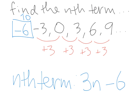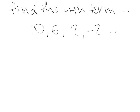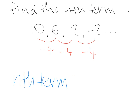Now we have the sequence 10, 6, 2, -2. First, investigate whether it's arithmetic. From 10 to 6 we minus 4, from 6 to 2 we minus 4, from 2 to -2 we minus 4 — so it is an arithmetic sequence. Step one: the common difference is -4, so we write -4n. Now we go backwards to find the zero term.